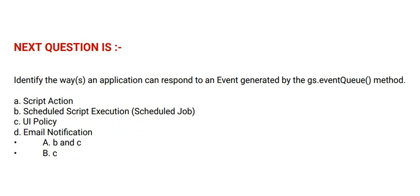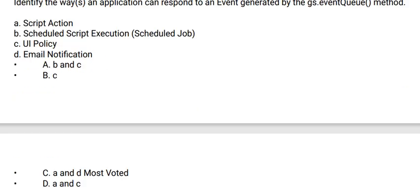Next question: Identify the ways an application can respond to an event generated by the gs.eventQueue method. Option A: Script action. Option B: Scheduled script execution. Option C: UI policy. Option D: Email notifications. The answer options are: A, B, and C; B and C; C and D; or A and C.